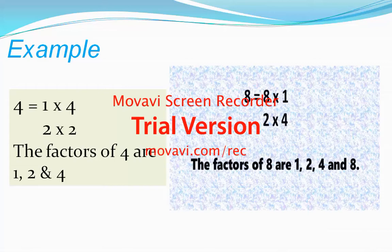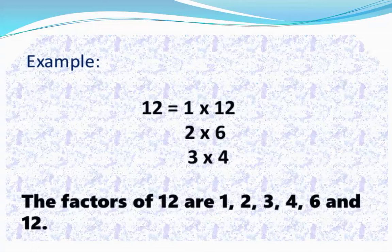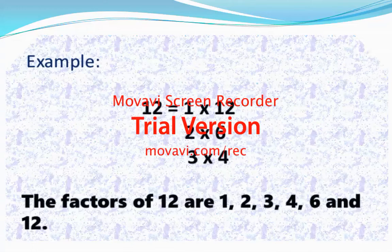So one, two, four, eight are factors of eight. For twelve: one times twelve is twelve, two times six is twelve, three times four is twelve.